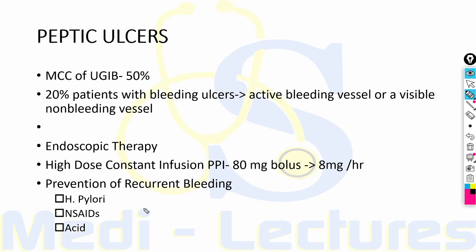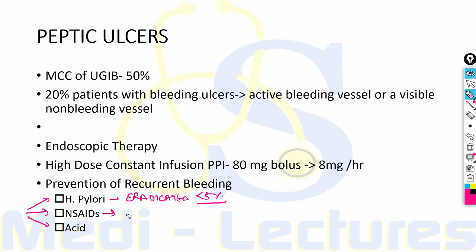To prevent recurrent bleeding in the long term, we focus on three factors responsible for ulcer pathogenesis: H. pylori, NSAIDs, and acid. If the ulcer is due to H. pylori, eradication decreases the re-bleeding risk to less than 5%. NSAIDs should be discontinued after an upper GI bleed; if still needed, we can use COX-2 selective inhibitors (coxibs).